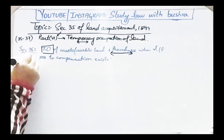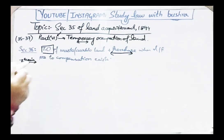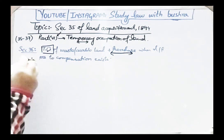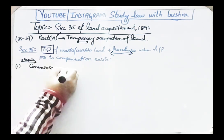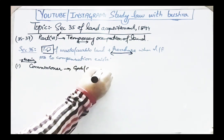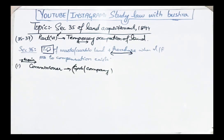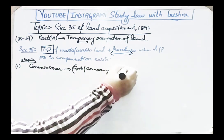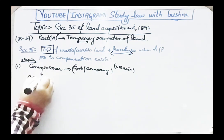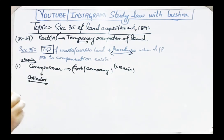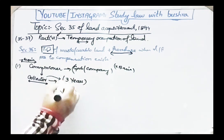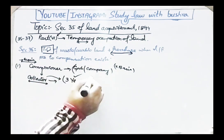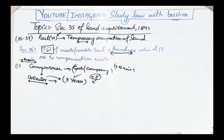Previously we discussed that when the government needs land permanently for a project, it permanently acquires it from the land owner. This section deals with temporary need. When it comes to the Commissioner's notice that the government or a company needs land temporarily, the Commissioner directs the Collector to acquire that land on a temporary basis for the project. The Collector's responsibility is to find suitable land and acquire it from the land owner for a temporary period of up to three years.